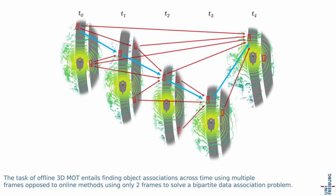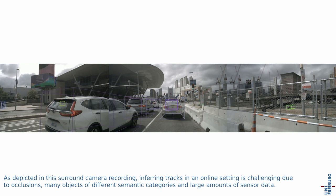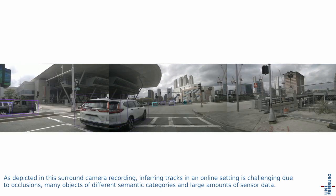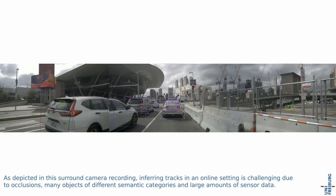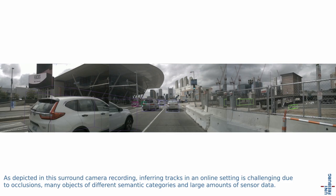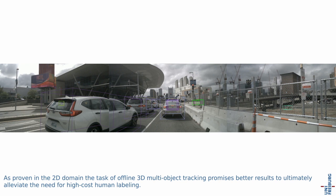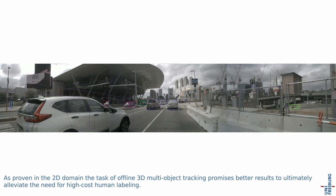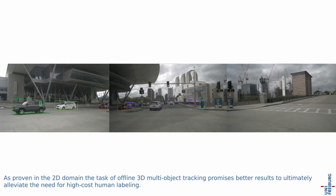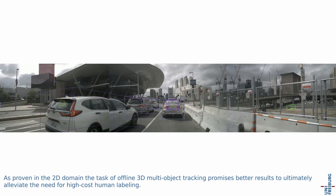The task of offline 3D multi-object tracking entails finding object associations across time using multiple frames, as opposed to online methods using only two frames to solve a bipartite data association problem. As depicted in this surround camera recording, inferring tracks in an online setting is challenging due to occlusions, many objects of different semantic categories, and large amounts of sensor data. As proven in the 2D domain, offline 3D multi-object tracking promises better results to ultimately alleviate the need for high-cost human labelling.